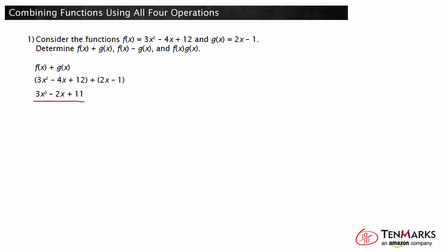Now let's determine f of x minus g of x. Substituting the given expression in for f of x and g of x results in 3x squared minus 4x plus 12 minus the quantity 2x minus 1. Distributing the negative results in 3x squared minus 4x plus 12 minus 2x plus 1.